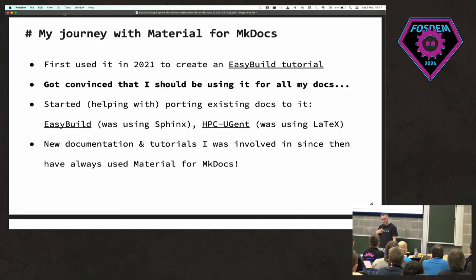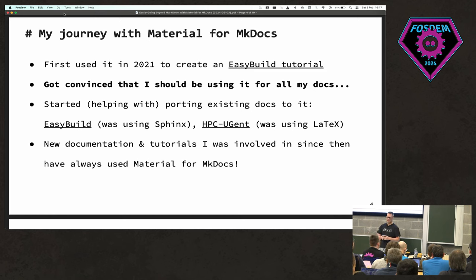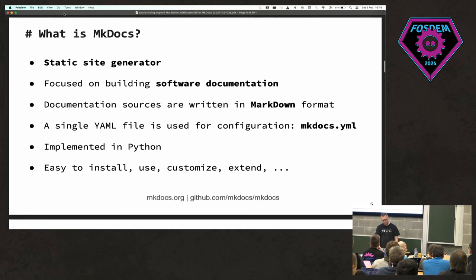My personal journey: I haven't been using it very long — basically since 2021. I wanted to create a tutorial website for EasyBuild. The existing EasyBuild documentation was in Sphinx; I wasn't happy with it — it felt slow, used RST, the syntax didn't make sense, and we weren't getting contributions. I found Material for MkDocs and was sold after five minutes. We also ported EasyBuild documentation and our HPC documentation at Ghent to Material for MkDocs.